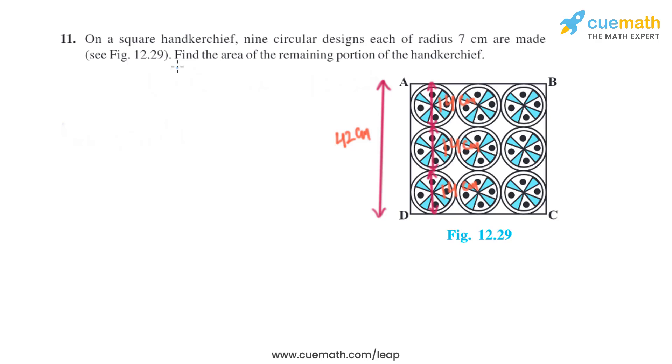Question 11 of this exercise says on a square handkerchief, nine circular designs each of radius 7 centimeters are made. Find the area of the remaining portion of the handkerchief. So it is given in the question that the radius is 7 centimeters.